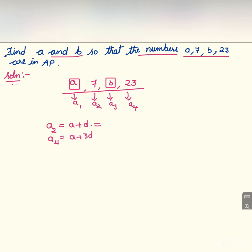A plus D equals 7, and A4, that is A plus 3D, equals 23. Let me take these as equation 1 and equation 2. Solving them as linear equations with two variables, let me subtract equation 2 from equation 1.